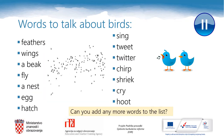Here are some words to talk about birds. Birds have feathers, they have wings, they have a beak, they fly, they have a nest, eggs, and they hatch. Birds sing and tweet and twitter and chirp and shriek and cry and hoot. Please copy the words into your notebook and try to add some more words to this list.